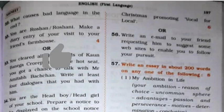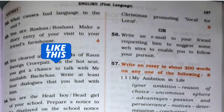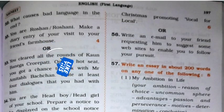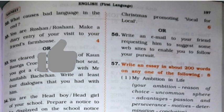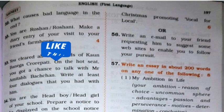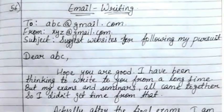Now the next question is: write an email to your friend requesting him to suggest some websites to enable you to follow your pursuit. For that the procedure is to write from and subject. The subject is: suggest websites for following my pursuit.